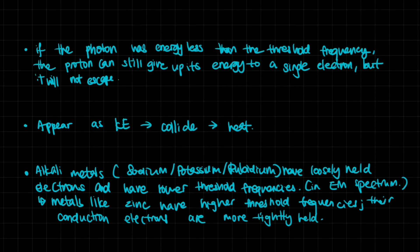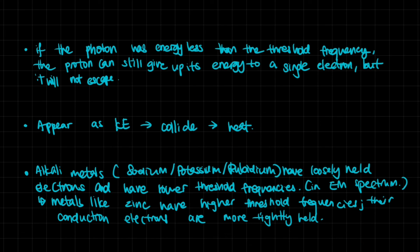Another scenario: what if the photon has less energy than the work function? The photon still gives up its energy to a single electron, but the electron won't have enough energy to escape. Instead, it appears as kinetic energy within the metal — the electron vibrates and collides with other atoms, creating friction. This energy is released as heat. This is why metals heat up when placed under light — the photon energy is absorbed but insufficient for escape, so it becomes thermal energy instead.